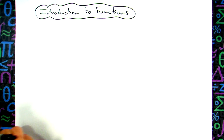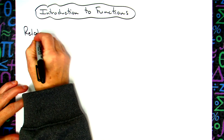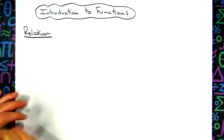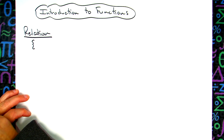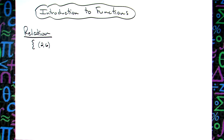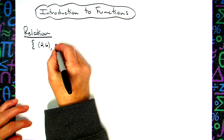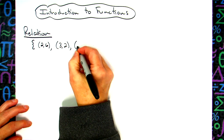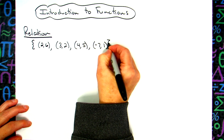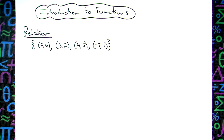The first thing we're going to look at is something called a relation. You have to have a relation before you can determine whether or not you have a function. A relation is just a set of ordered pairs — two things being compared to one another. You'll see set brackets containing ordered pairs like (2,6), (3,2), (4,5), (negative 7, 1). That is a relation — we're comparing the x coordinates to the y coordinates.